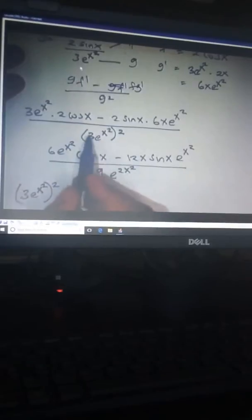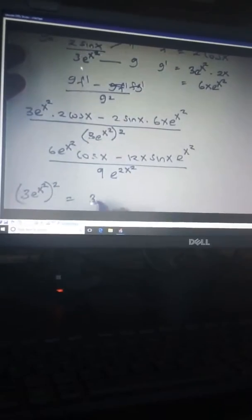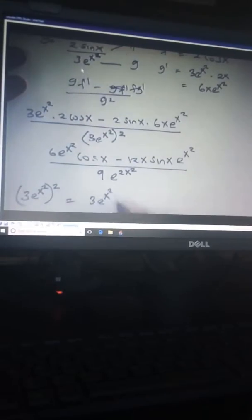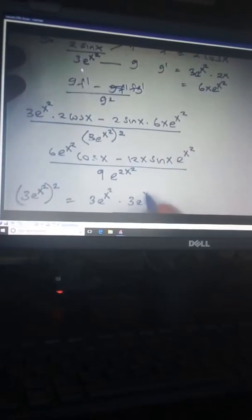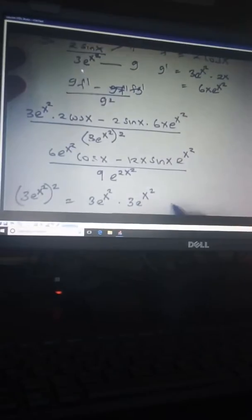All things squared, that is this part I am explaining. This will be just 3e^(x²) times 3e^(x²), because power 2 means repeating 2 times.